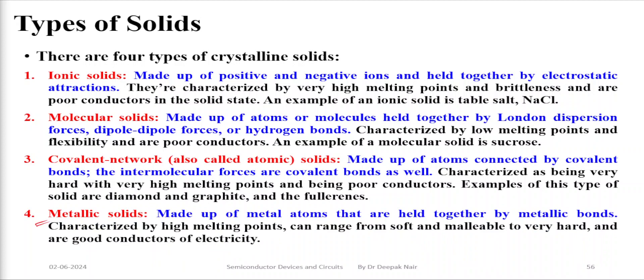The last type of crystalline solids found in nature are metallic solids. These are made up of metal atoms held together by metallic bonds, and they generally have very high melting points. They have a range of behavior — some are soft, some are malleable, and some are very hard. In general, these materials are very good conductors of electricity.